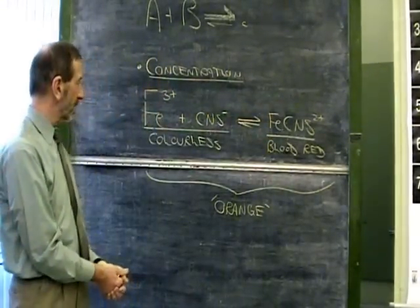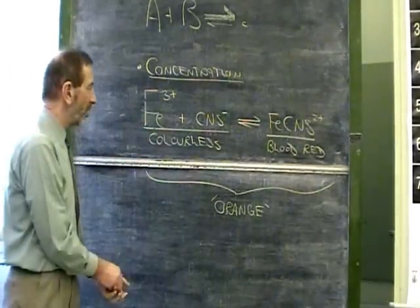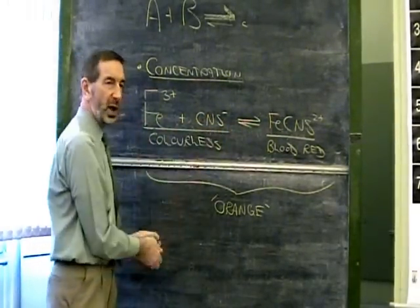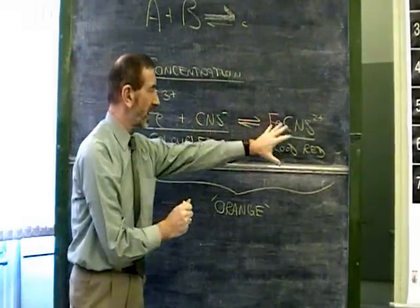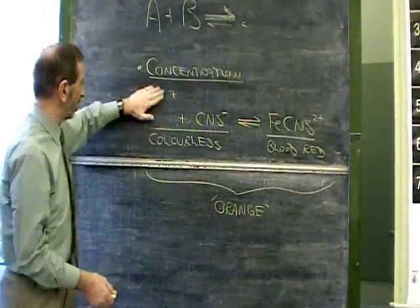And that's precisely what happens. When we have more material on the left than should be there, the forward reaction is encouraged to take this material and put it over to that side. So adding more iron ions will make it shift to the right.